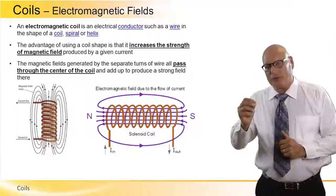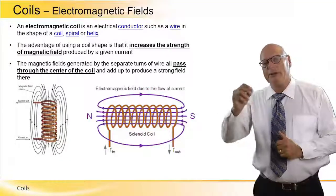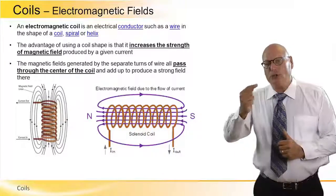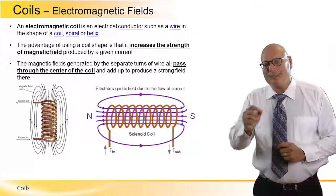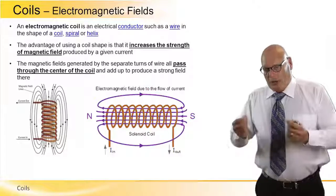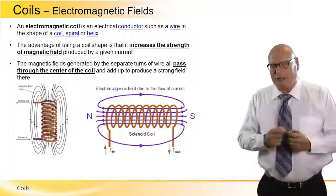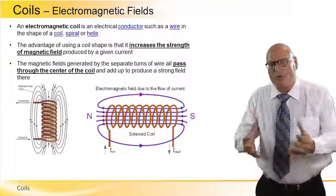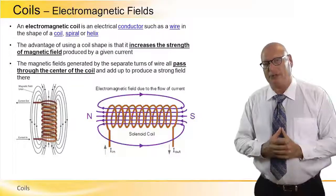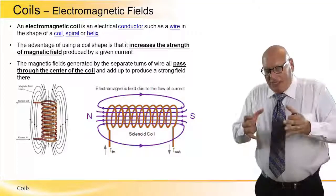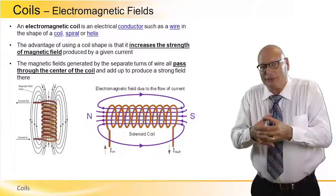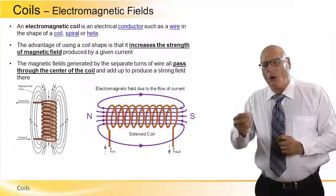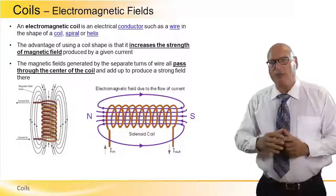An electromagnetic coil is an electrical conductor, such as wire, in the shape of a coil, spiral, or helix — as these two pictures demonstrate. The advantage of using a coil shape is that it increases the strength of the magnetic field by concentrating the field and increasing the intensity, meaning the number of lines and the force of the magnetic field itself. Most importantly, the magnetic fields generated by the separate turns all pass through the center of the coil and add up to produce a strong field there.